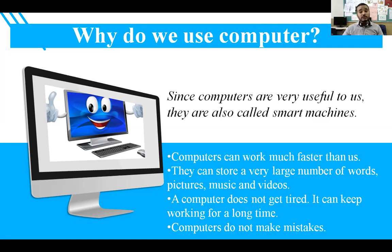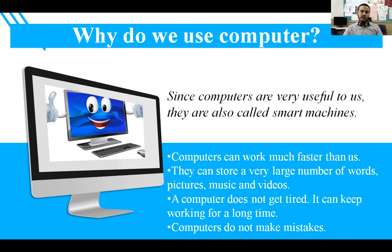You can store a number of things in your computer — thousands of songs, pictures, videos, and movies. Also, very importantly, we human beings make mistakes, knowingly or unknowingly, but computers do not make mistakes because they are machines. As a computer is useful in so many ways, that is why it is also known as a smart machine.